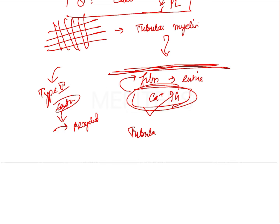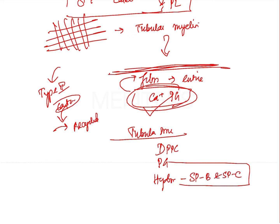The factors necessary for formation of surfactant include: the formation of tubular myelin, which requires DPPC, phosphatidylglycerol, and the hydrophobic proteins SP-B and SP-C. Glucocorticoids play a major role in formation and maturation of surfactant. Thyroid hormones also increase the surfactant by increasing the size and number of inclusion bodies in the type 2 cells.